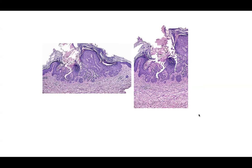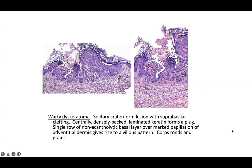This is a single lesion that's cup-shaped and a little endophytic with acantholysis and dyskeratosis — so warty dyskeratoma. It's usually a solitary crateriform lesion with suprabasilar clefting. You'll see centrally densely packed laminated keratin forming a plug. There can be some areas without acantholysis, and the overall architecture is papillomatous, giving this appearance of a villous pattern.